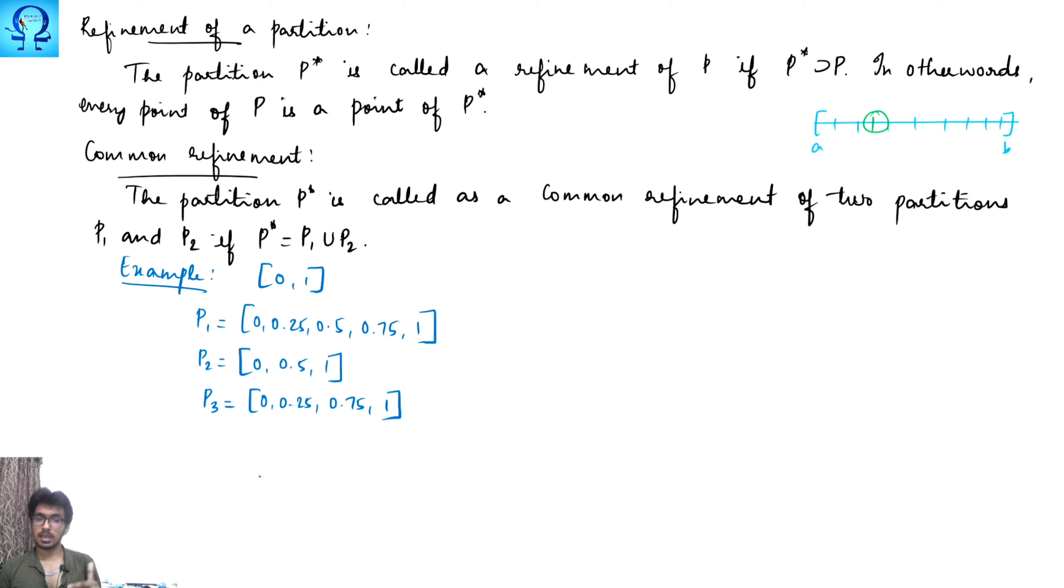Here let us see all possible things. Let us talk about the refinement and the common refinement. Supposing I have these three, let us talk about them. Here if you see, your P1 is refinement of P2 and P3. When you make union of P2 and P3, you are going to get your P1. So in this case, this P1 is called as the common refinement.